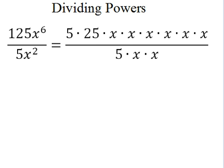So if I write these out, I can rewrite 125 as 5 times 25, which I did because there's a 5 in the denominator, which will help cancel nicely. And then x to the sixth I wrote out in its factor form as x times x times x times x times x times x. And I did the same thing on the bottom — I expanded x squared to be x times x.